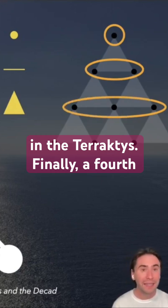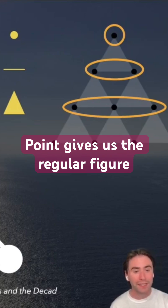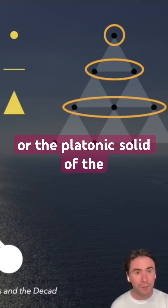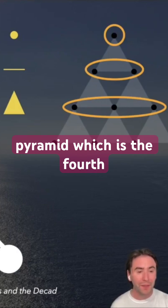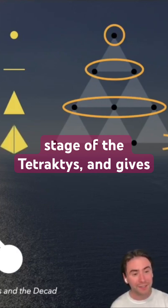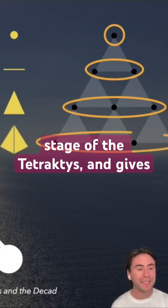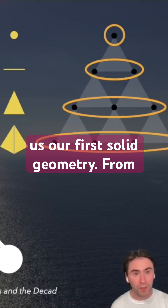Finally, a fourth point gives us the regular figure, or the Platonic solid of the pyramid, which is the fourth stage of the Tetractus, and gives us our first solid geometry.